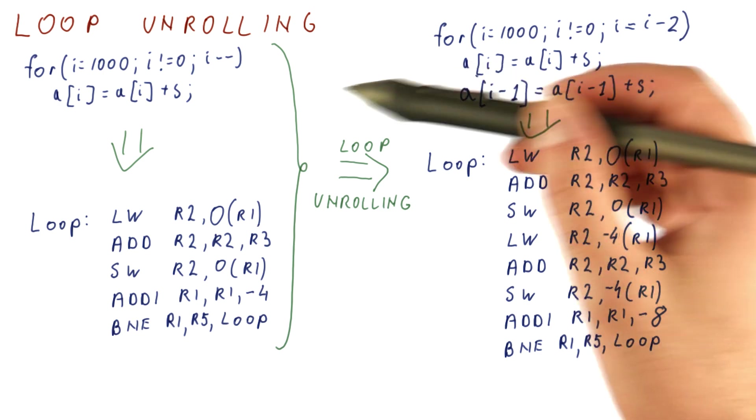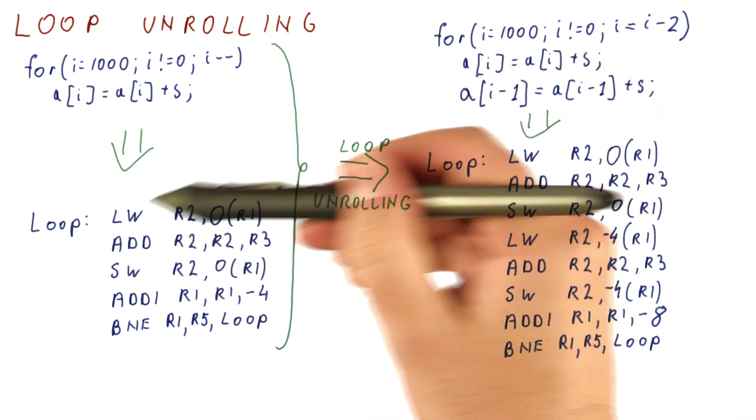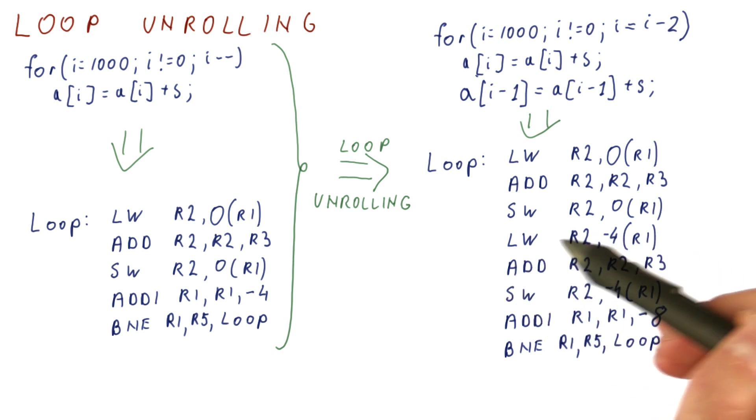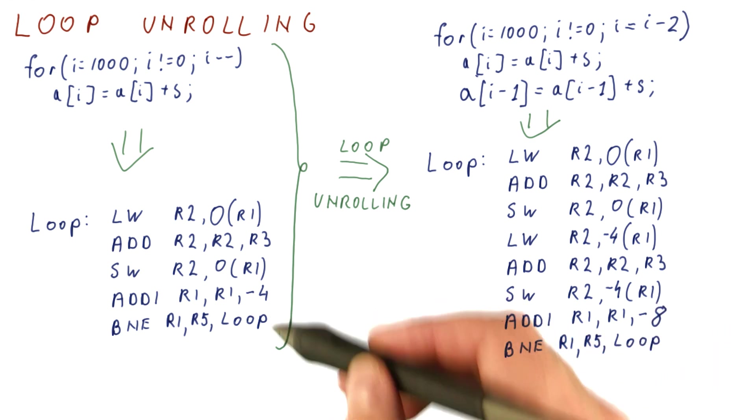So the approach to unrolling once is take the original work, copy twice, adjust the second copy so that it does the second iteration's worth of work, and then adjust the loop count so that it's moving by two iterations, not by one.